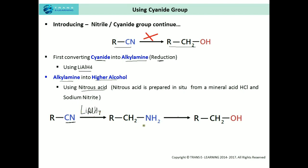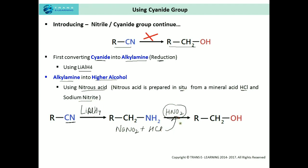Then we convert this aliphatic amine into the higher alcohol using nitrous acid. This nitrous acid is prepared in situ from a mineral acid — hydrochloric acid — and sodium nitrite. Reacting sodium nitrite with hydrochloric acid gives the nitrous acid used to obtain the alcohol.